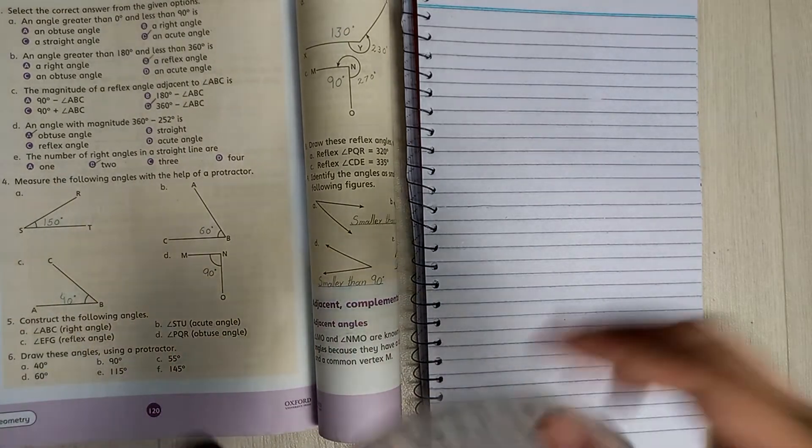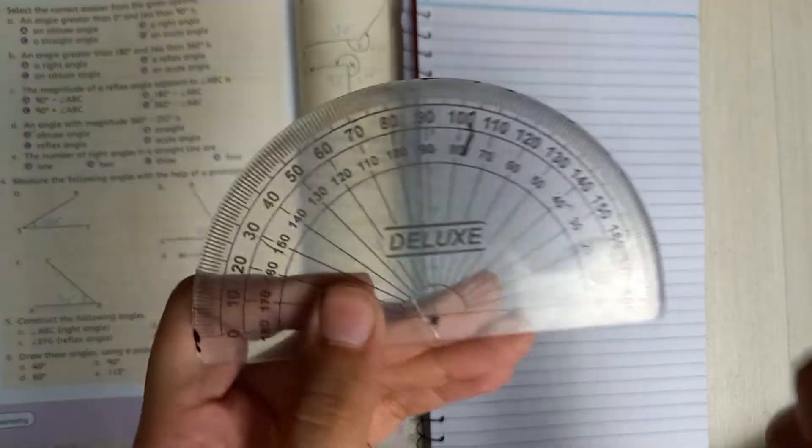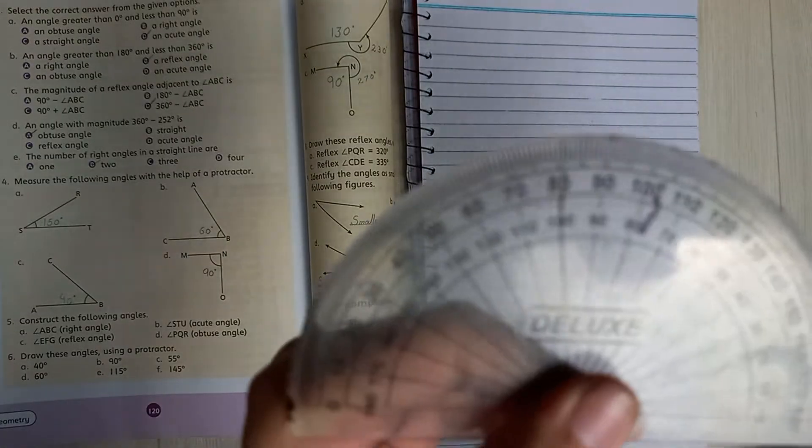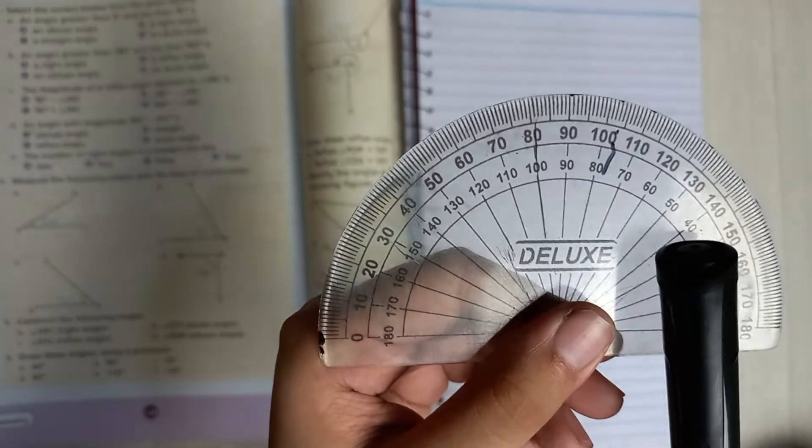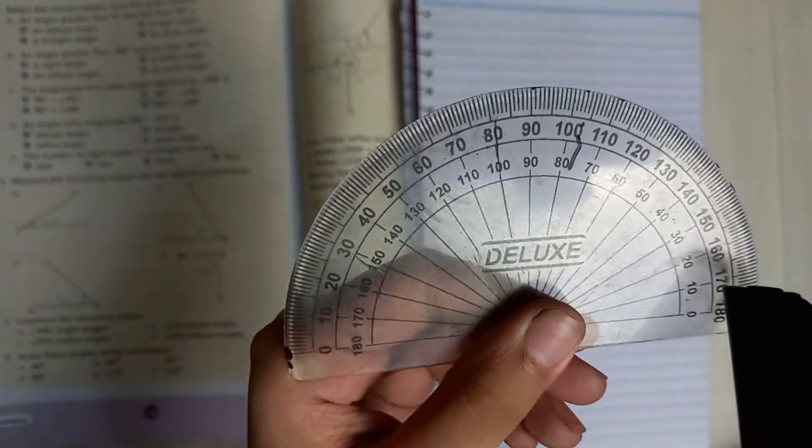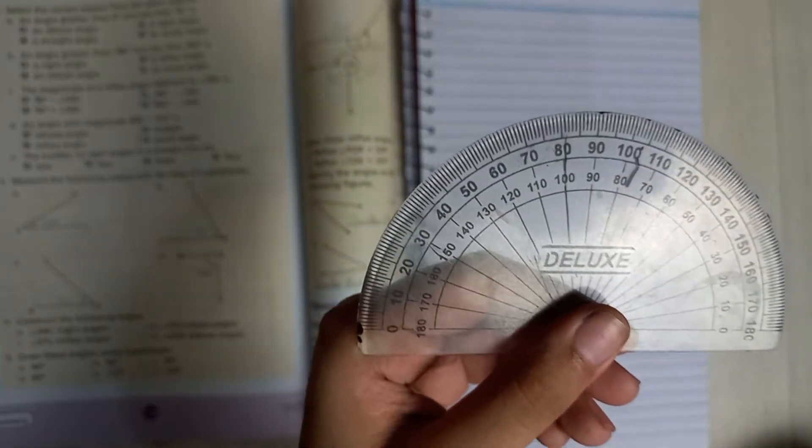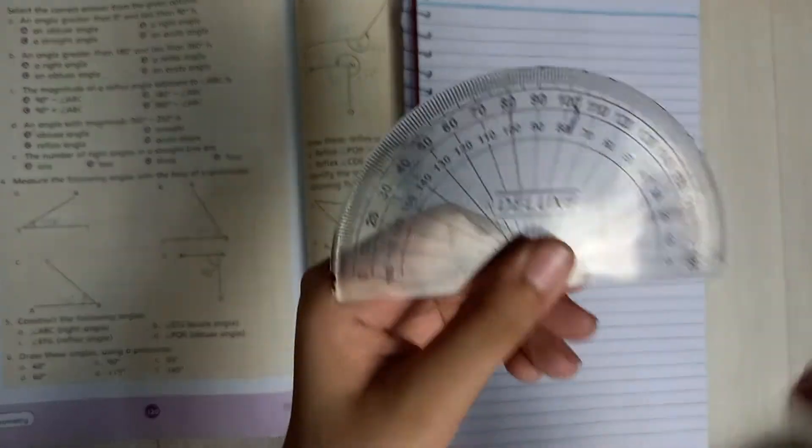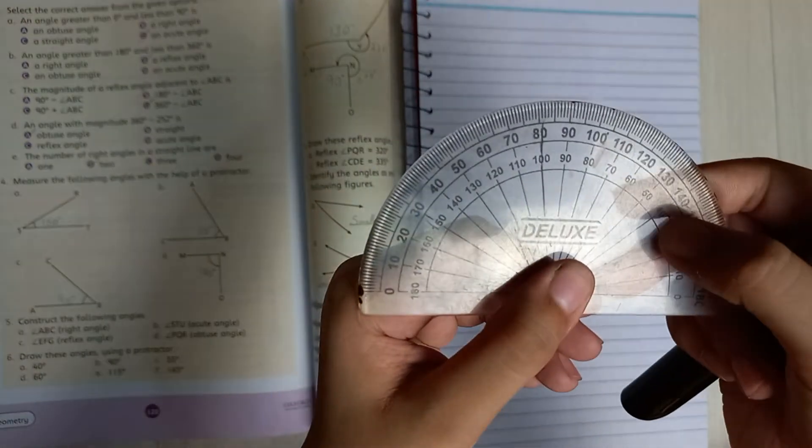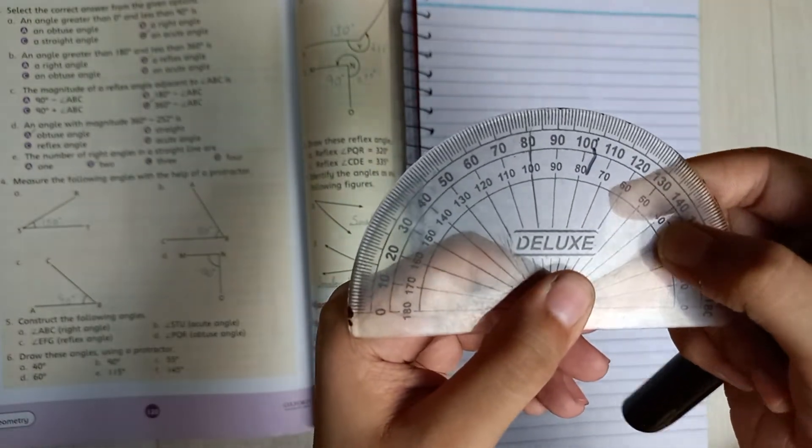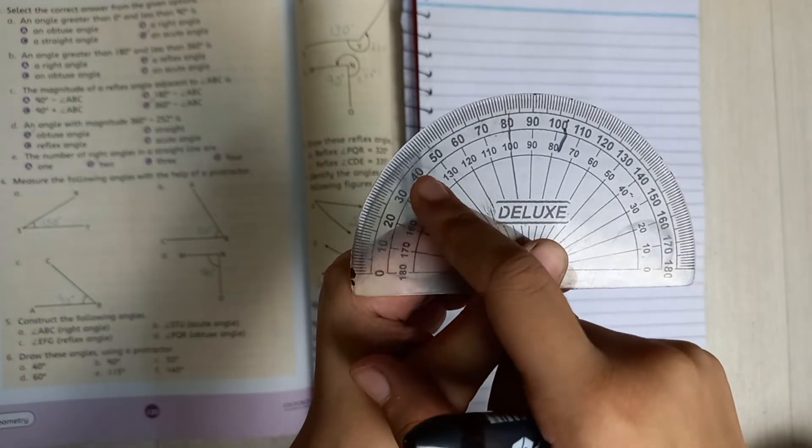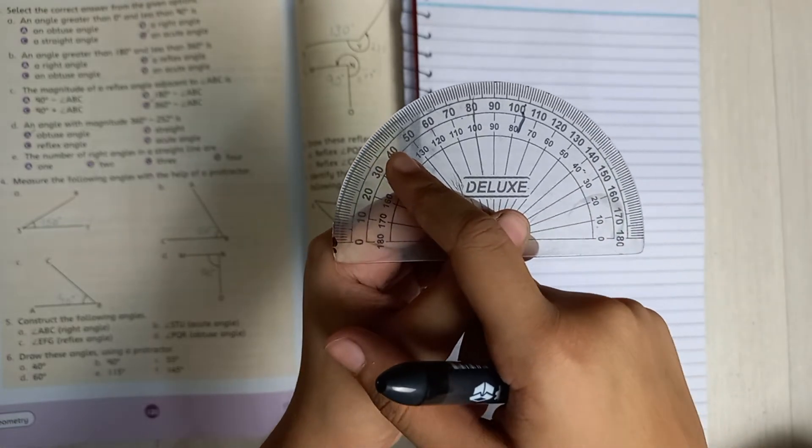The first one is 40 degrees. Our D scale has 40 right here. You can use the inner line or outer line, but I want to use the outer line. If you use the inner line, your 40 should be here. If you use the outer line, your 40 should be here. That's why I'm doing it like this.